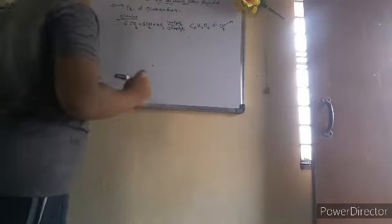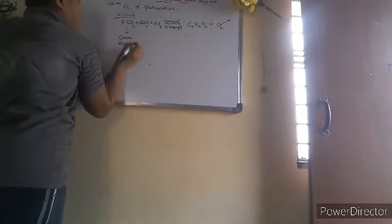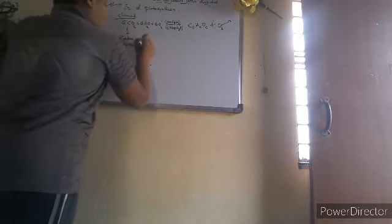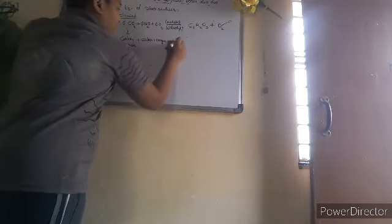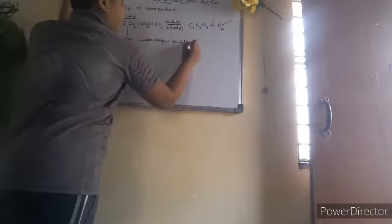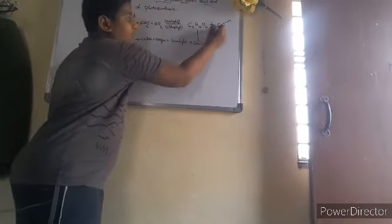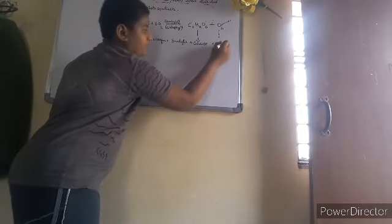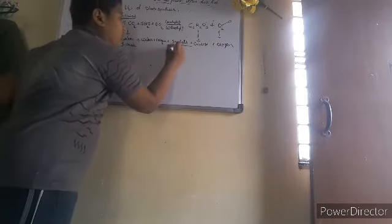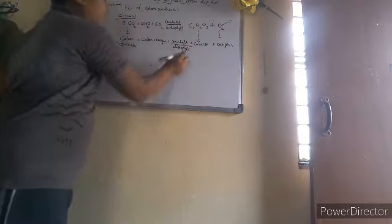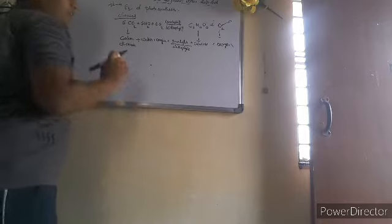So we can see: CO2 means carbon dioxide, plus H2O which is water, plus O2 which is oxygen, plus sunlight, gives glucose plus oxygen again. Here sunlight is in the bracket above and chlorophyll is below — so sunlight is in the numerator and chlorophyll in the denominator. This is the chemical equation for photosynthesis.